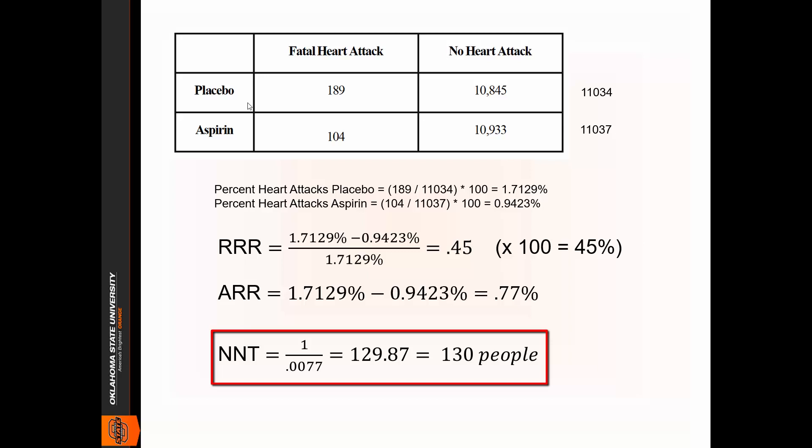Go ahead and just round that because this is expressed in terms of individuals. So what this means is we would have to give 130 people the aspirin to prevent one fatal heart attack. You want this to be a small number. For example, let's say it were 10, we'd only have to give 10 people the aspirin to prevent one fatal heart attack. That would be much more impressive than if we had to give a thousand people the aspirin to prevent one heart attack.